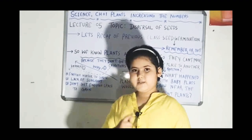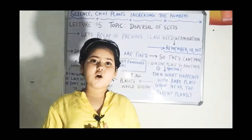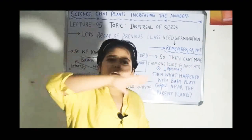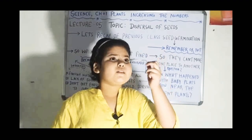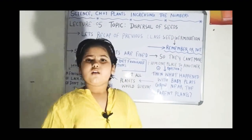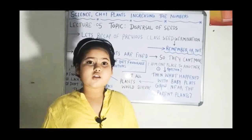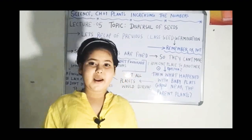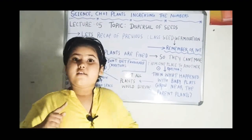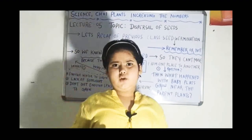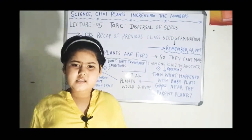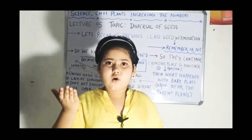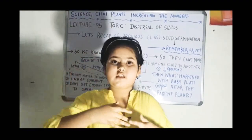The second point is lack of sunlight. The parent plant is too huge, so when the sun produces sunlight, the parent plant takes most of it. Only those baby plants that get a little bit of sunlight survive; the others die. Third, plants don't get enough space to grow. All the tiny plants are under the parent plant. Some that do grow end up touching the parent plant and get destroyed.